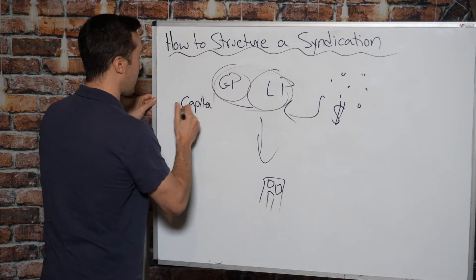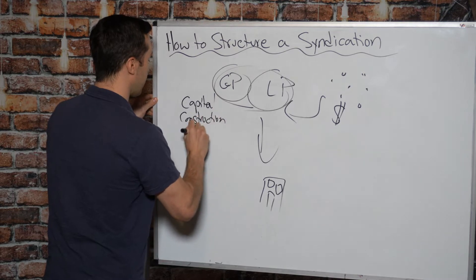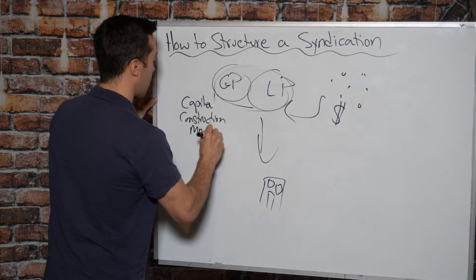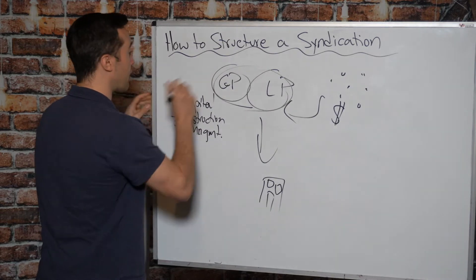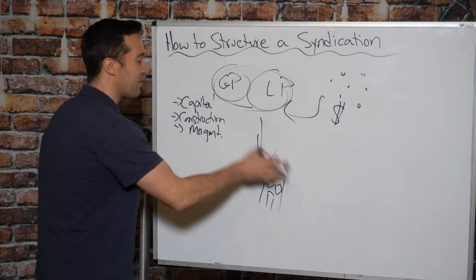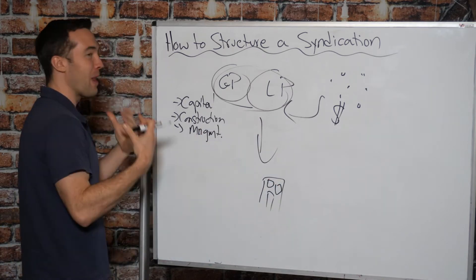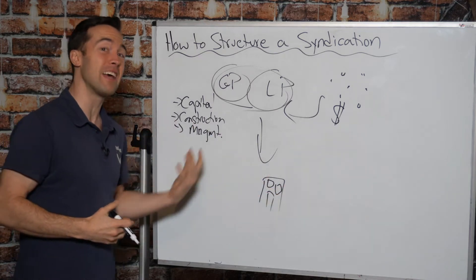I mentioned construction. Management. All these different things are useful to the general partnership. Without capital, the deal doesn't happen. Without construction, without renovations, the deal doesn't happen. Without active management, the deal doesn't happen. Without actually the deal itself, the deal doesn't happen.